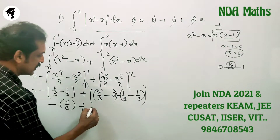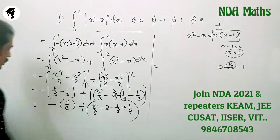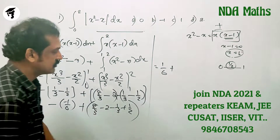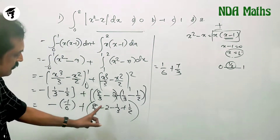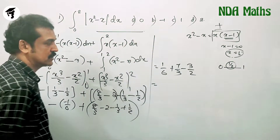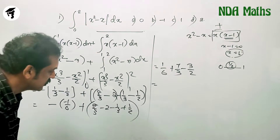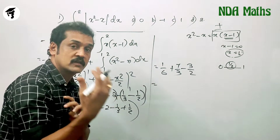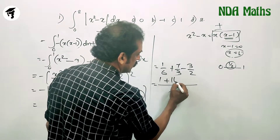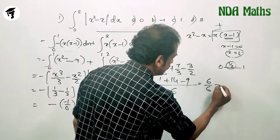Next: 8/3 minus 2 minus 1/3 plus 1/2. That equals 7/3 minus 2 plus 1/2. Simplifying: 7/3 minus 3/2. Common denominator 6: 14/6 minus 9/6 equals 5/6. So 1/6 plus 5/6 equals 6/6. Answer is 1.